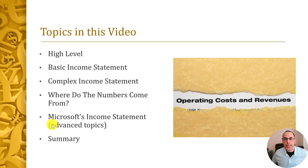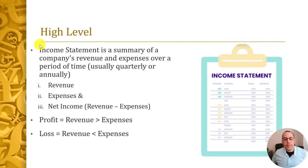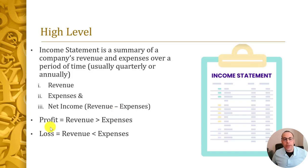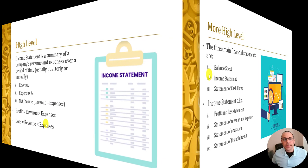A company's income statement is a summary of their revenue and expenses over a period of time — it could be a quarter, a month, or a year. The very top of the income statement is their revenue, the bulk is the expenses, and the bottom line is their net income, which is revenue minus expenses. A company is profitable if revenue is greater than expenses, and not profitable if revenue is less than expenses.